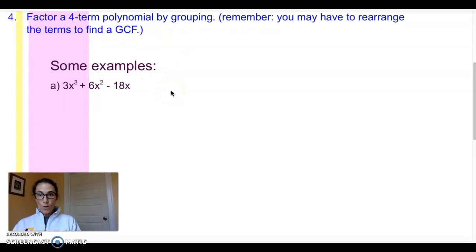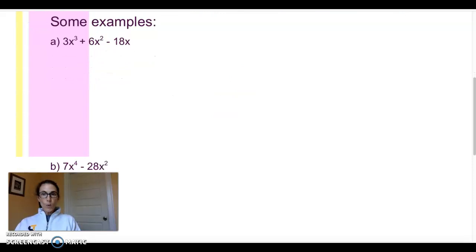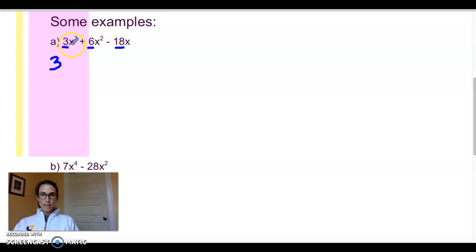Let's look at example A. The first thing we check is whether each term has a greatest common factor. I notice that each coefficient is a multiple of three, so we start by bringing a three out front. Then looking at the variables, each term shares an x, so we can take one x out of each term. Our greatest common factor is 3x.